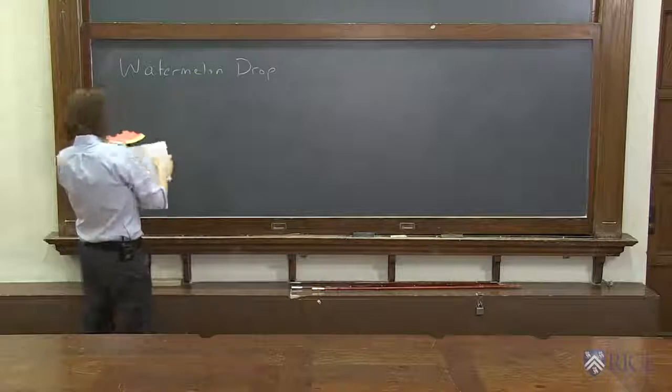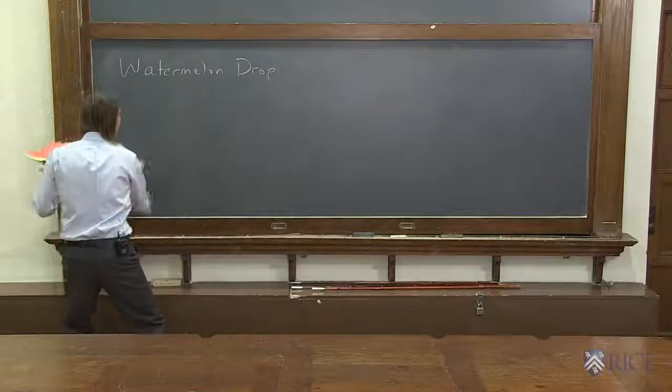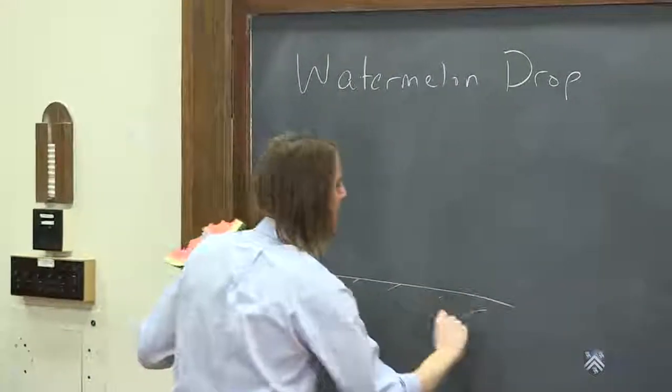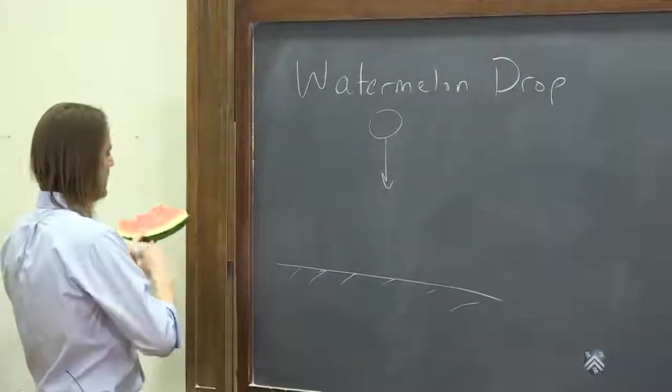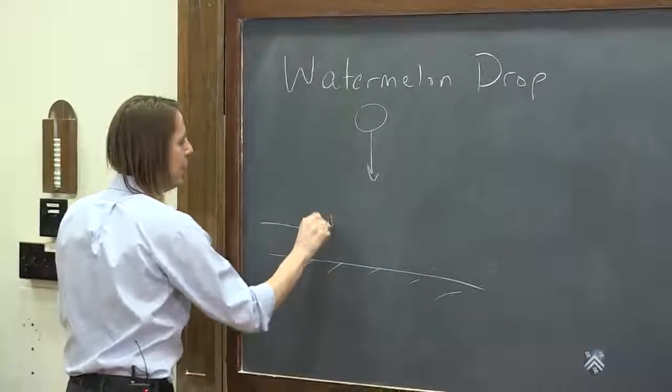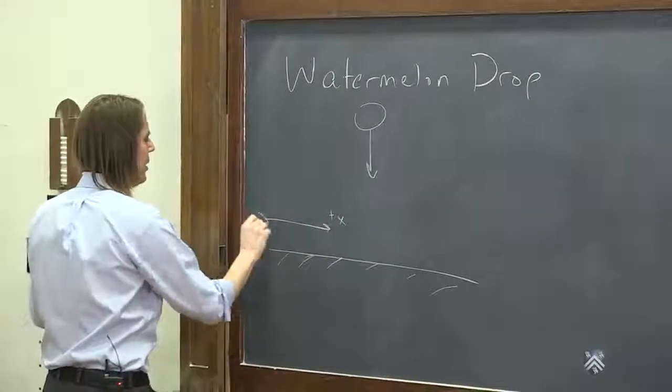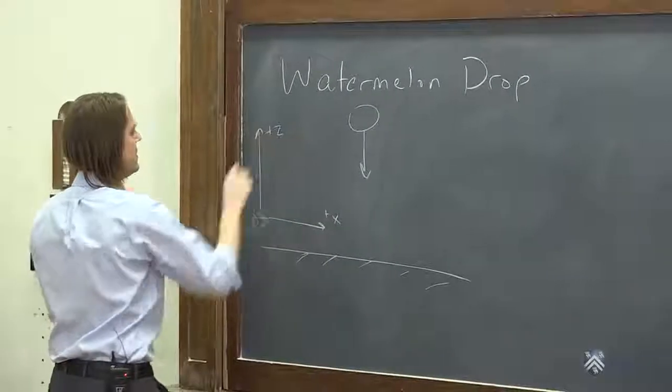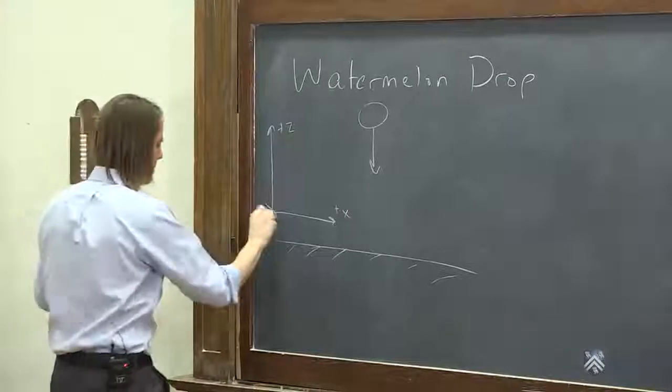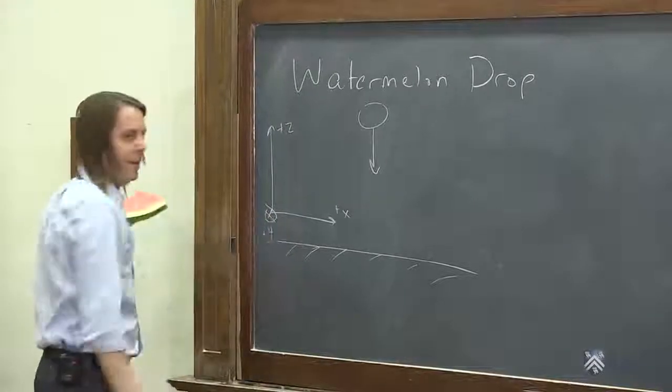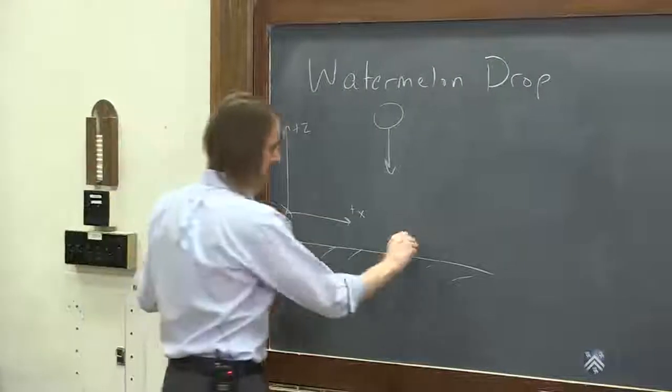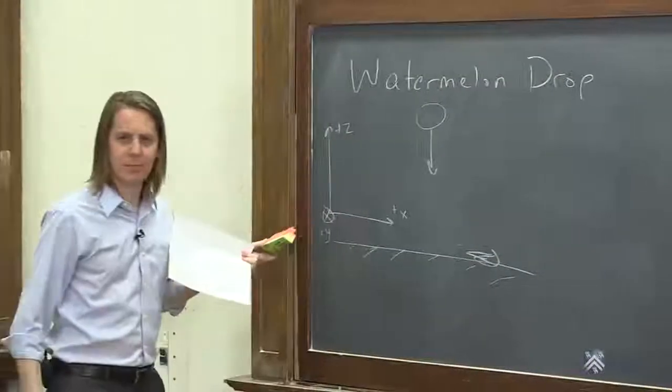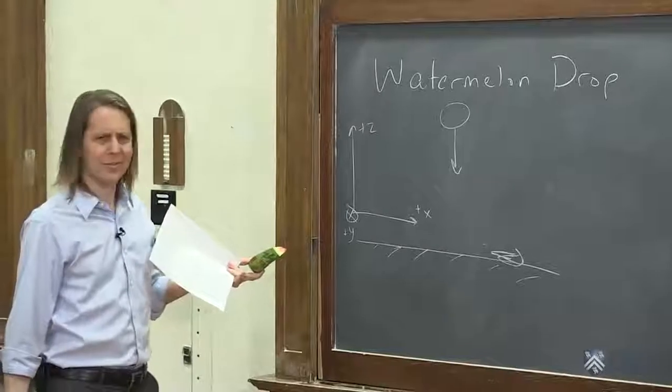We had it coming down from on high like that, smashed into the ground. Let's set up a coordinate system here. So we're going to have plus x that way, plus z that way. So y must be into the board like that. There's our coordinate system. It came down and it smashed and made a mess on the ground. What does that have to do with momentum?